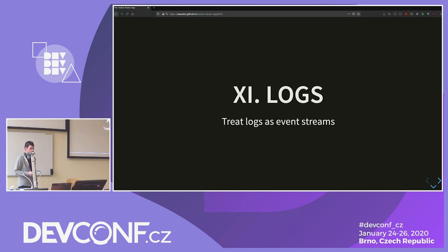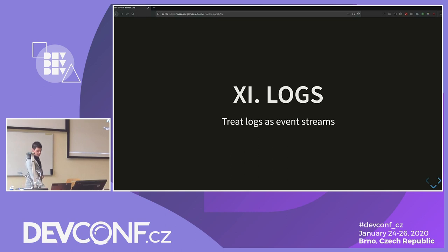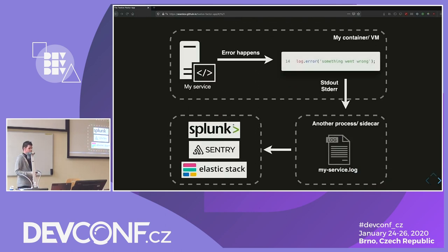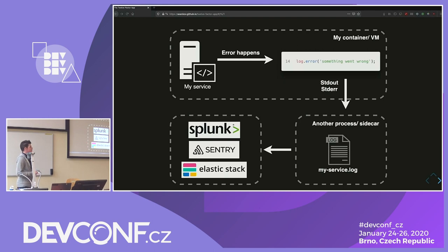The 11th factor is called logs. Logs are really important for our application — as seen from the previous example, this is where we go when things go wrong. We should treat them as events and not files. When looking at logs, we usually don't go to the production machine and look at the console, but use a third-party system like Splunk or Sentry. The golden rule is that our application should not care how logs get from our application to the third-party service. Ideally it should just write to standard out and standard error, and another process or sidecar reads from there, formats the data, and sends it to the provider. This gives us flexibility to change that process without any code changes in our application.